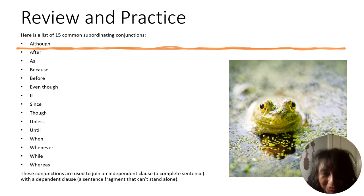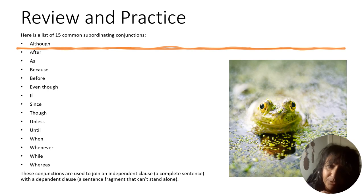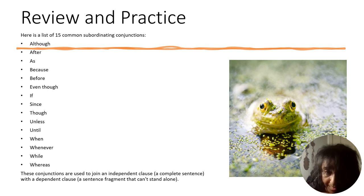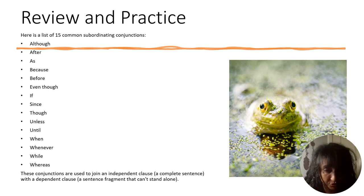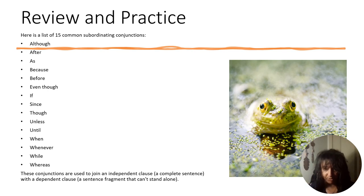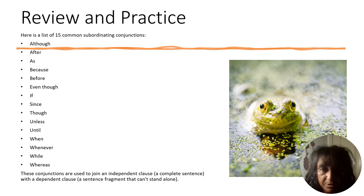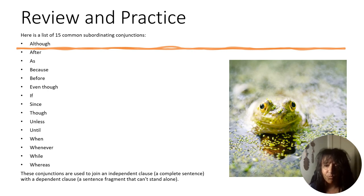Now it's time for you to review and practice. Here on the screen are 15 common subordinating conjunctions. Remember, these conjunctions are used to join an independent clause — a complete sentence — with a dependent clause — a sentence fragment that cannot stand alone. Here are some common ones: although, after, as, because, before, even though, if, since, though, unless, until, when, whenever, while, and whereas.